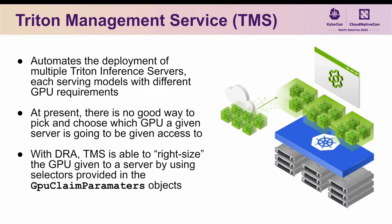For the final demo, I will be showing how we have built a POC of integrating DRA support into one of NVIDIA's flagship AI products — the Triton Management Service, or TMS for short. For those not familiar with TMS, it provides an automated way of deploying multiple Triton inference servers onto a Kubernetes cluster, each of which may serve models with varying GPU requirements. At present, there is no good way for TMS to pick and choose which GPU a given server will be given access to when running in a mixed-GPU environment.